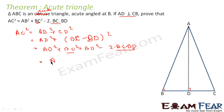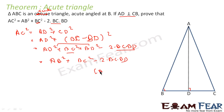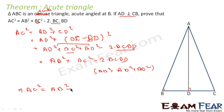Because in triangle ABD, using the Pythagoras theorem, AD² + BD² = AB². Therefore I get: AC² = AB² + BC² − 2·BC·BD. Hence the theorem is proved.